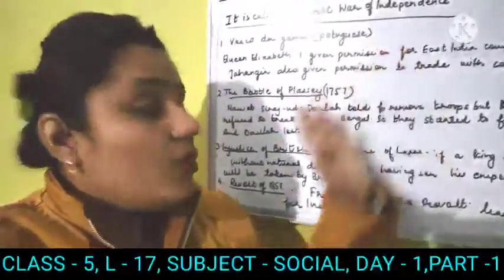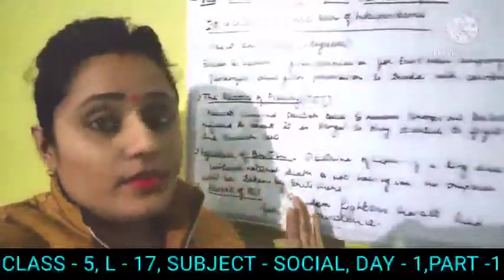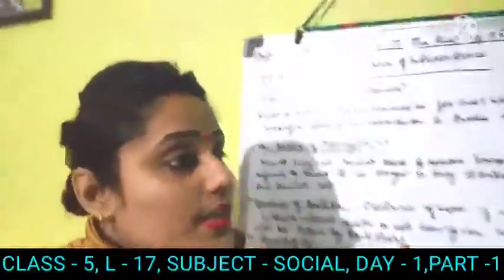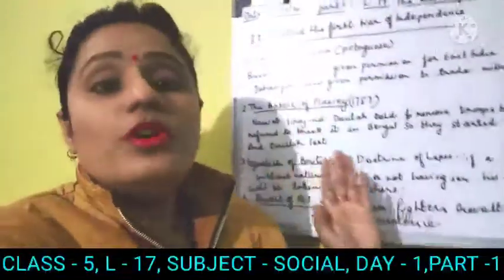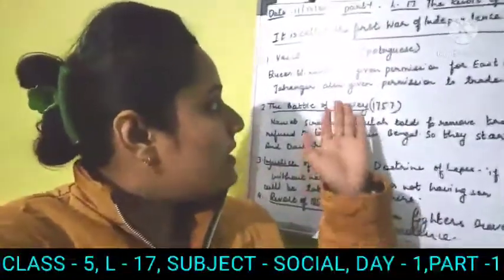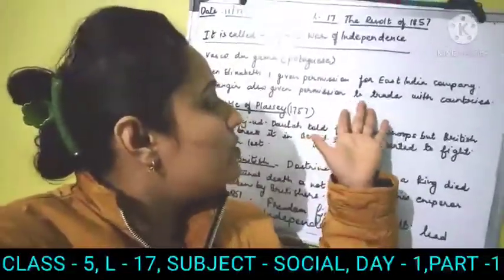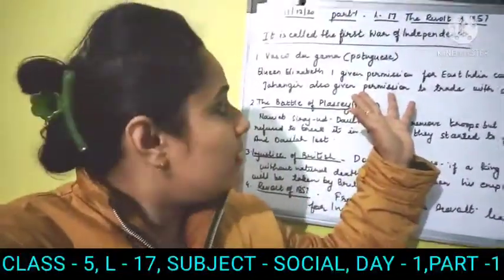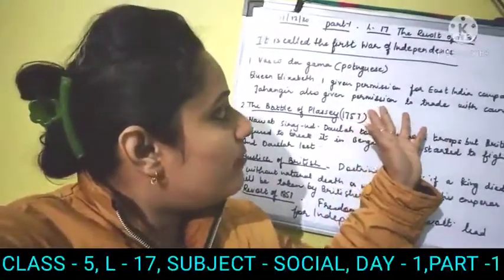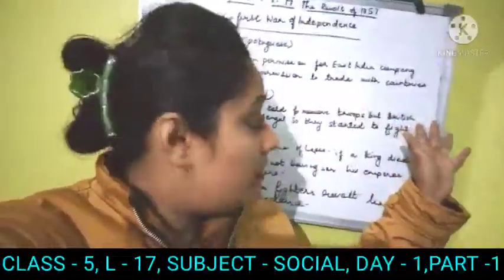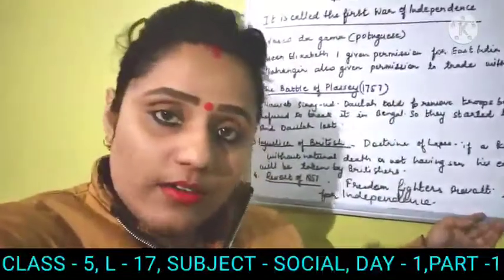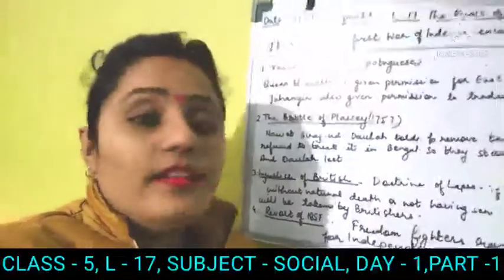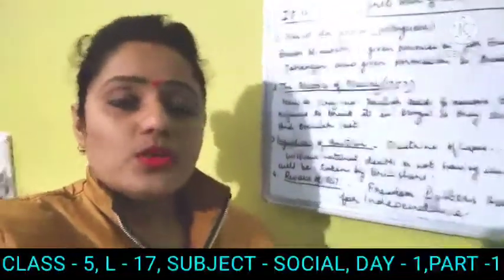Next, how they got permission to trade: Elizabeth the First gave permission to establish the East India Company. Then Jahangir, the Mughal Emperor and son of Akbar, also gave them permission to trade with the countries from India to other countries. Like the French and British were permitted to enter and trade.